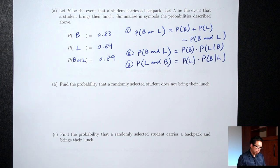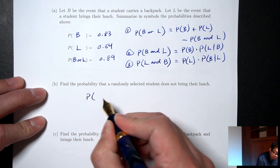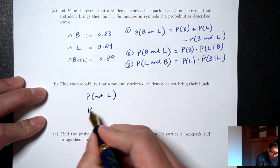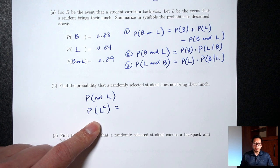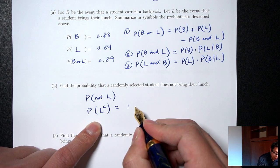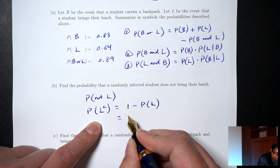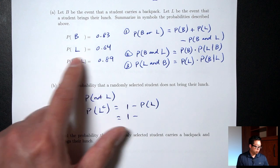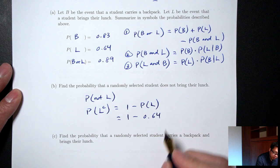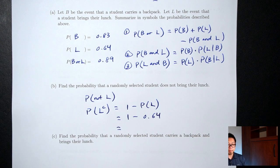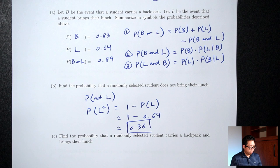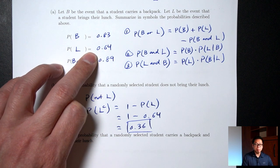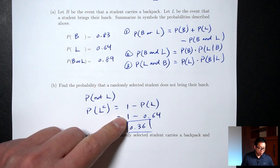Part B asks for the probability that a randomly selected student does not bring their lunch. That's the complement of L. Using the complement rule: one minus probability of L equals one minus 0.64 equals 0.36.